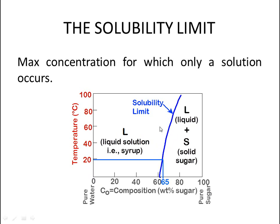To the left of the solubility limit is a liquid solution, like syrup — all regions are liquid. To the right of the solubility limit, both liquid and solid phases exist; the solid portion is sugar. For example, at 19 degrees Celsius, the solubility limit corresponds to 60 weight percent sugar, as shown on the diagram.